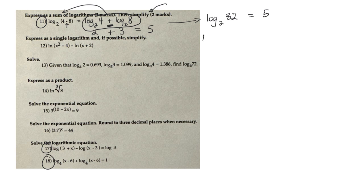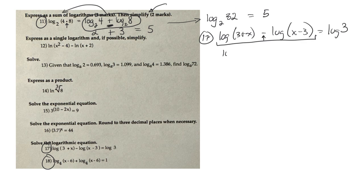Now, number 17 at the bottom there, it has log of 3 plus x minus log of x minus 3 is equal to log of 3. So this is an equation. And what I need to do is squish these two. Since there's a minus there, that's the quotient rule. So it would be log of 3 plus x over x minus 3 is equal to the log of 3.